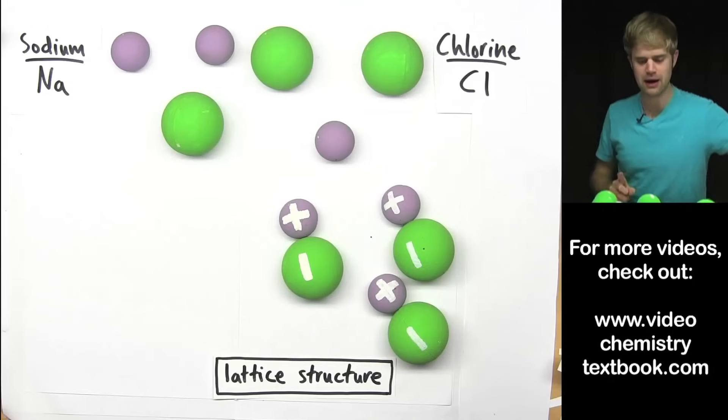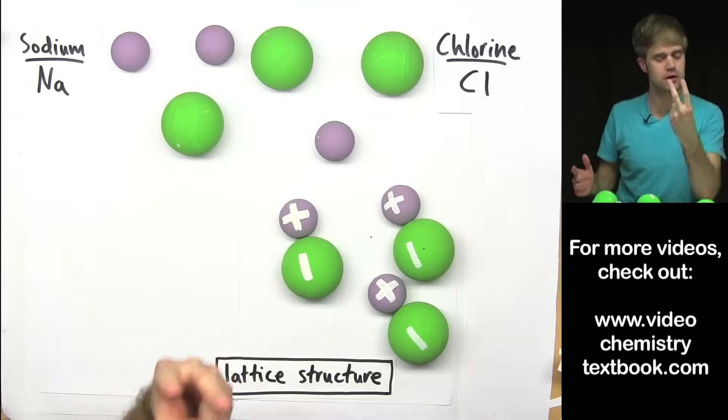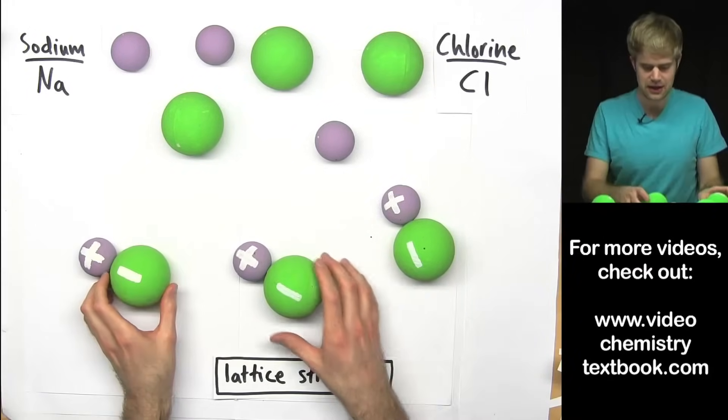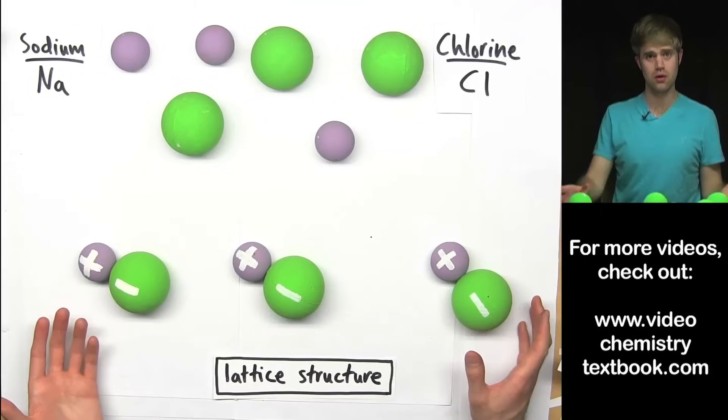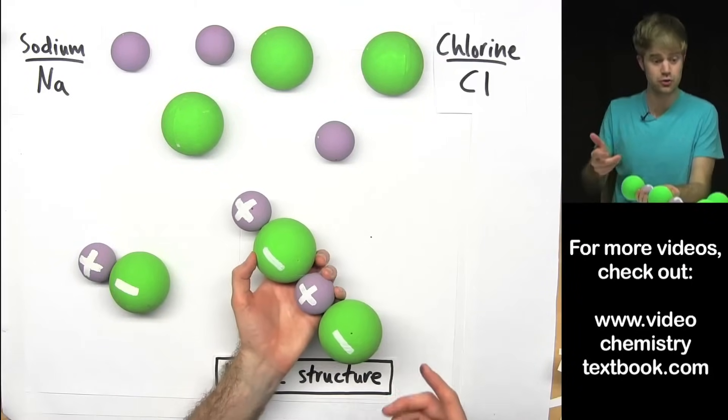So the important thing to keep in mind is that ionic bonding, when you're talking about more than just two atoms, it doesn't only make these small groups of two.